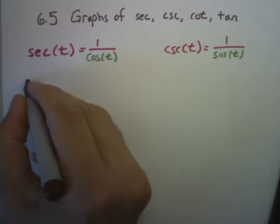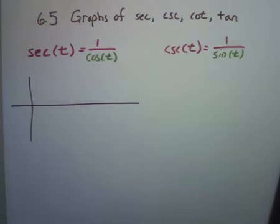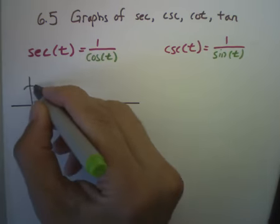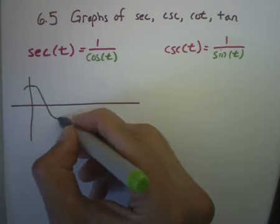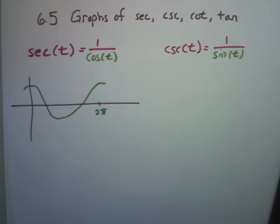The easiest way to approach this I think is to actually look at the graph of cosine and then see how secant looks compared to that. Keep in mind that cosine starts at one, comes down, goes back up, and that happens in a space of 2π.